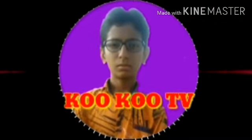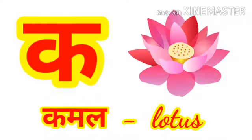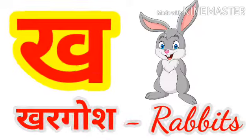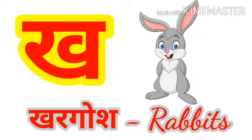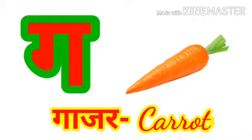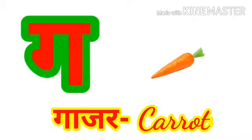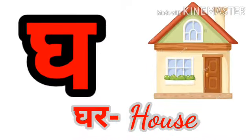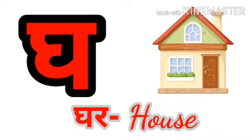Ka say Kukko (Rooster). Ka say Kamal — Kamal means Lotus. Kha say Kargosh — Kargosh means Rabbit. Gha say Gajar — Gajar means Carrot. Gha say Ghar — Ghar means House.